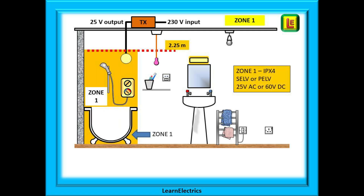Zone 1 is the standing space above the bath, from the floor up to the height of 2.25 metres. The width of Zone 1 is the width of the outside edges of the bath — not the same as the width of Zone 0, which is the inside of the bath. The area underneath the bath is also Zone 1 if the underside is open. Any equipment in Zone 1 must be IPX4 rated, including an electric shower if installed. Any lighting in this area should also be IPX4, and the voltage should be SELV or PELV, limited to 25 volts AC or 60 volts DC, with the transformer installed outside the zones.